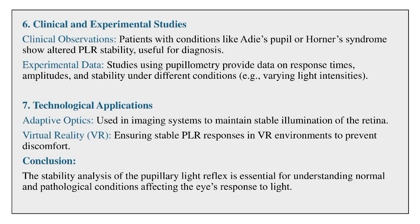Clinical and experimental studies: Patients with conditions like Adie's Pupil or Horner's Syndrome show altered PLR stability, useful for diagnosis. Experimental data from pupillometry studies provide information on response times, amplitudes, and stability under different conditions, such as varying light intensities.